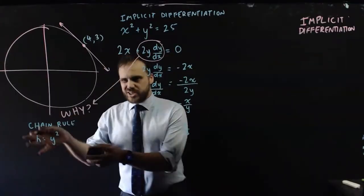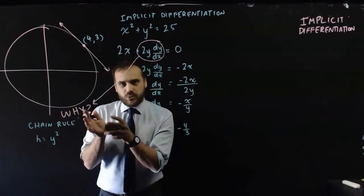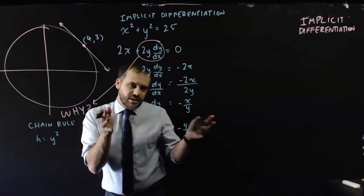h equals y squared. h just randomly. Now, y, there's a bunch of stuff in y. y is something in terms of x.